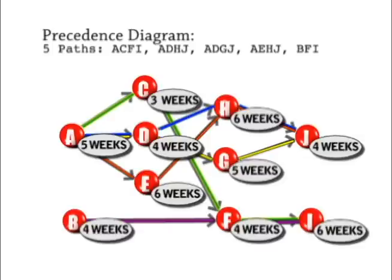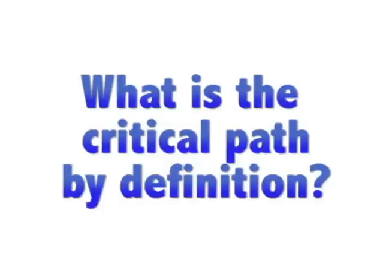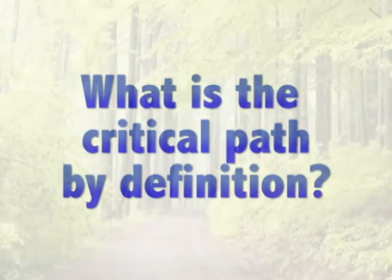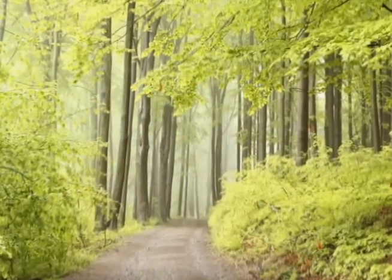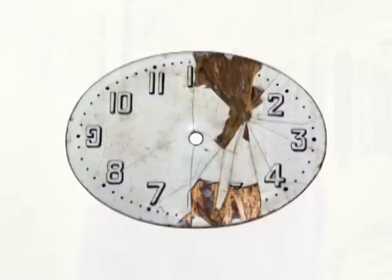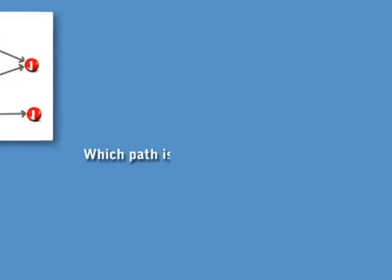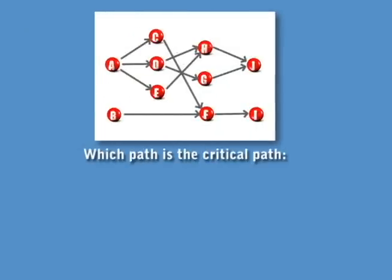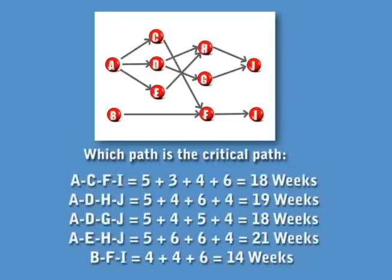We can go through and use the information for each one of these activities to identify what the critical path is. The critical path is that path that, if you had any delays on it, it would delay the entire project. That means there is zero slack time associated with the critical path. We can add up each one of the activity times and we see that for our first path it's 18 weeks, second 19, third 18, fourth 21, and fifth is 14.